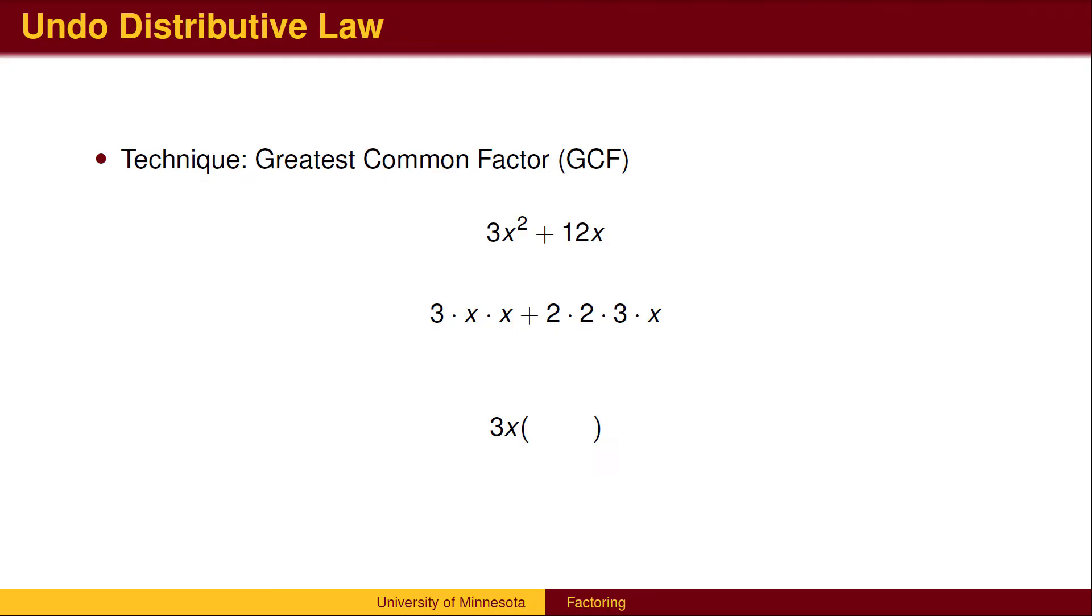We then wish to find the other factor. Here is where the process uses division. The first term is 3x squared. We factored out 3x. What remains after the factoring? That is, what can we multiply 3x by to get 3x squared? The factor that is left over is x. When we factor 3x out of 12x, we are left with the two factors of 2, which is 4.